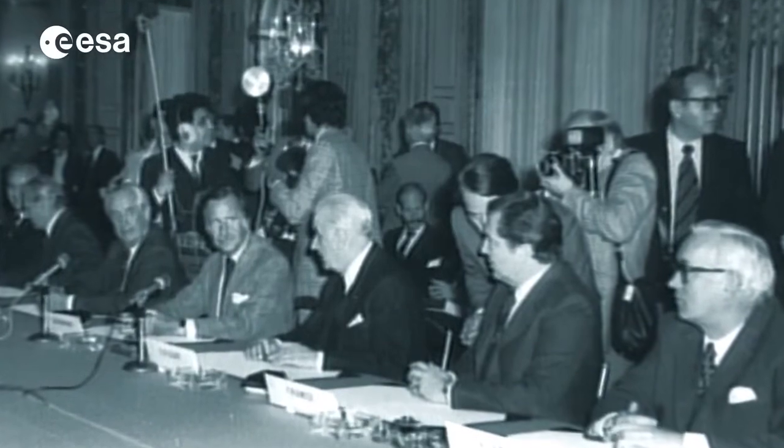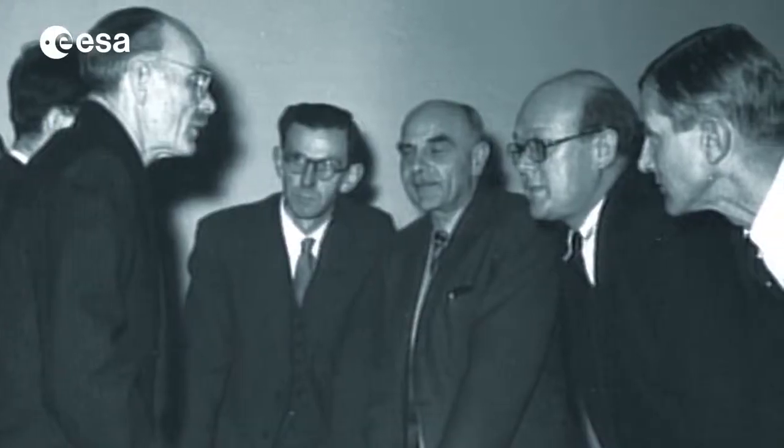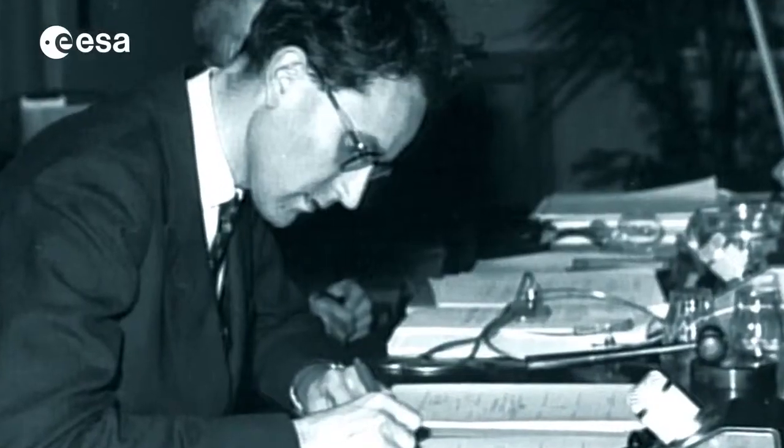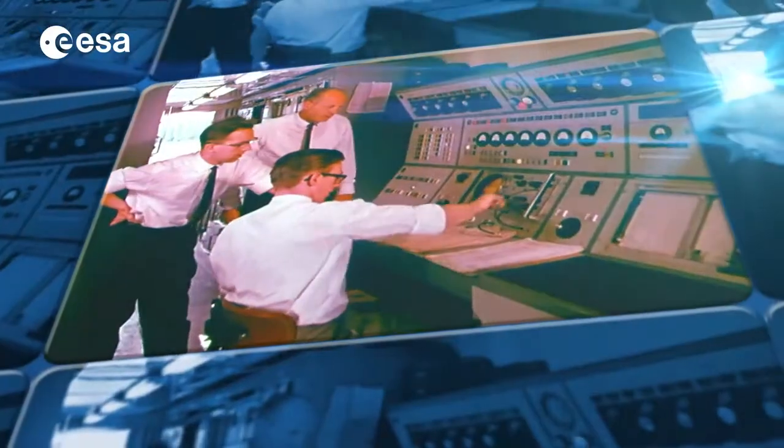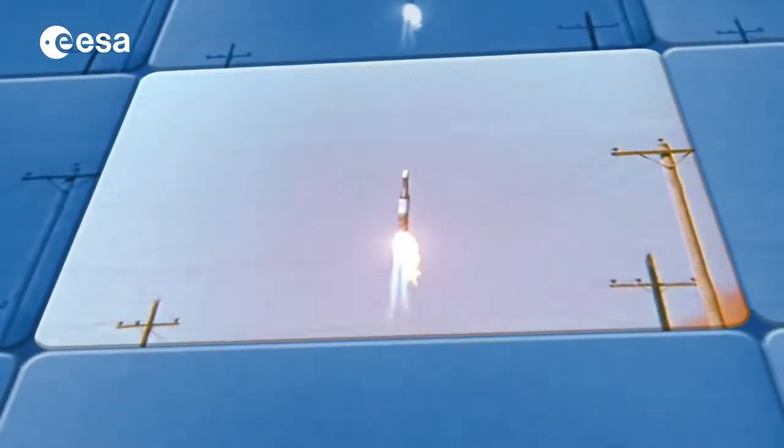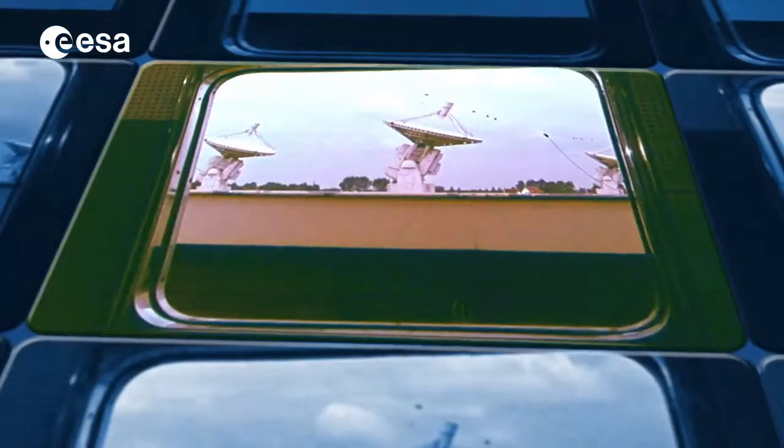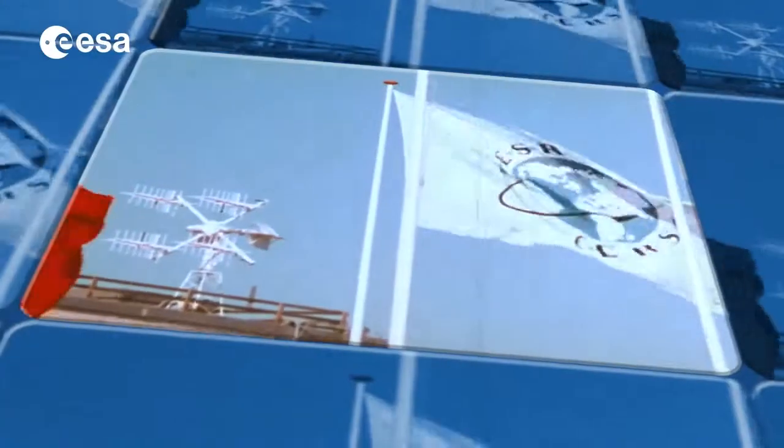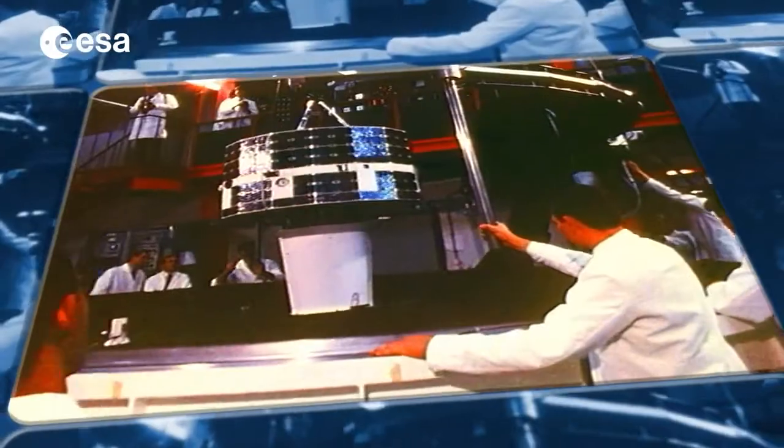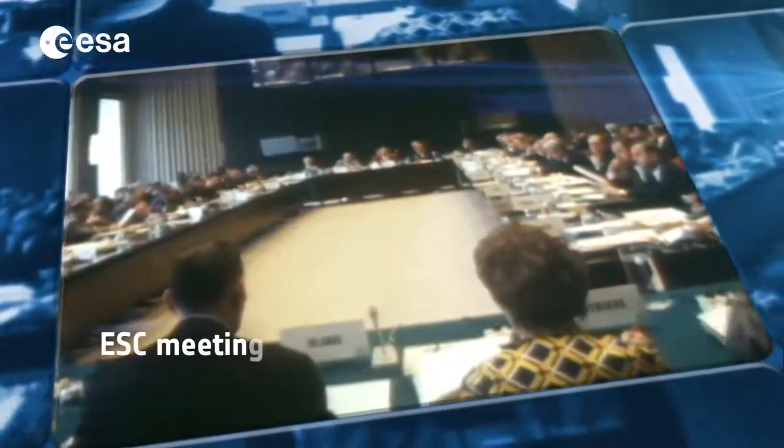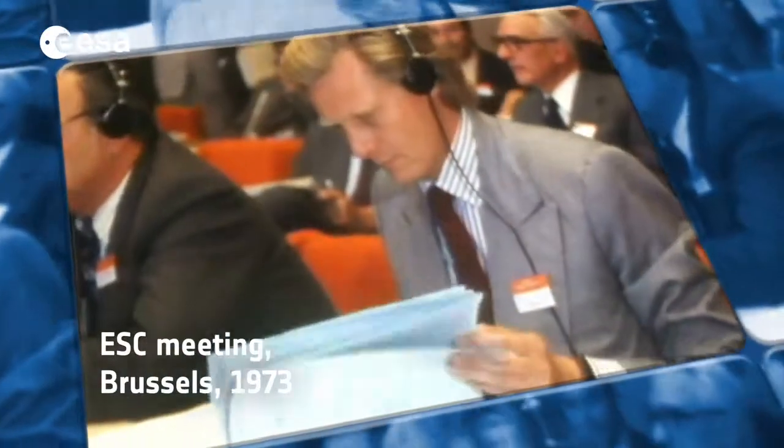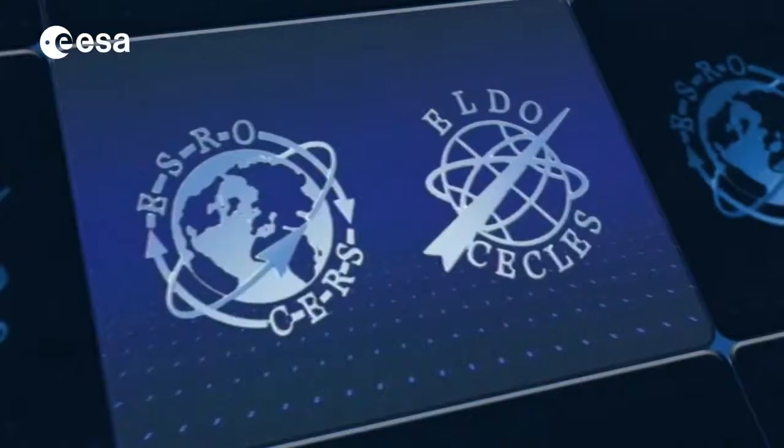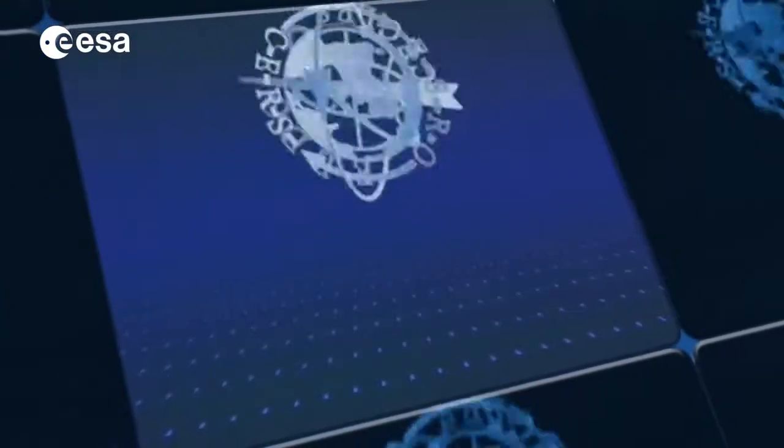All this is possible because, 50 years ago, European leaders with vision took key decisions. In 1964, the creation of ELDO to develop a shared European launcher and ESRO, dedicated to building scientific satellites, gave the initial impetus for the successful industry we have today and paved the way for the creation of ESA.